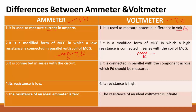Ammeter is the modified form of the moving coil galvanometer in which a low resistance is connected in parallel with the coil of the moving coil galvanometer. When the galvanometer is converted into ammeter, the low resistance and galvanometer are connected in parallel, with currents Ig and I minus Ig. But voltmeter is the modified form of the moving coil galvanometer in which a high resistance is connected in series with the galvanometer coil.